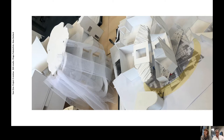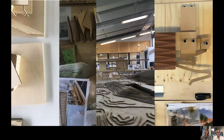We realised that in fashion the model is called the toile and the initial toiles are quite rough and ready, made in a cheap fabric, all about silhouette. But the final fashion toile generally emulates as best as possible a garment as you would find in a professional space, and that architectural models don't work in this way.